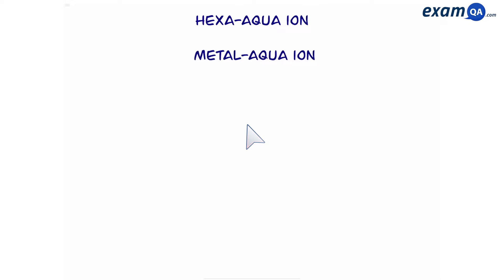Welcome. In this video we're going to be learning about hexa aqua ions, also known as metal aqua ions. This chapter can be both easy and hard at the same time. The reason it can be easy is because all you have to do is memorize a bunch of colors and formulas. And the reason it's hard is because you have to memorize a lot of colors and formulas. With that said, let's begin.